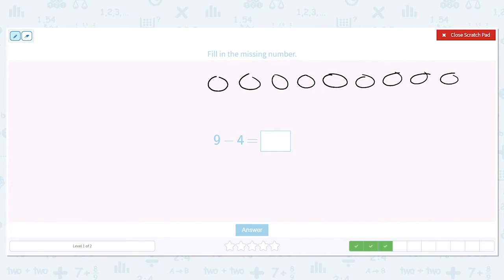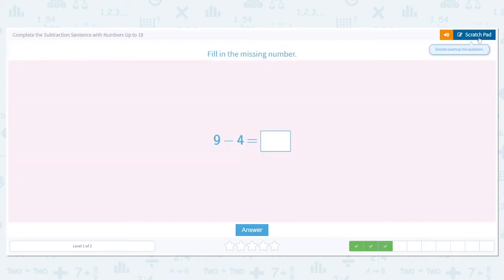How many am I subtracting? I'm subtracting 4. Cross out 4. 1, 2, 3, 4, 5. How many do I have left? 1, 2, 3, 4, 5. I have 5 left. So 9 minus 4 equals 5.